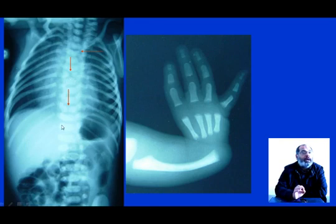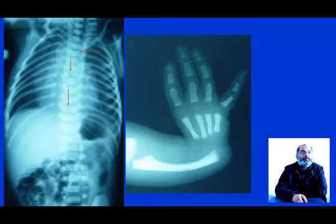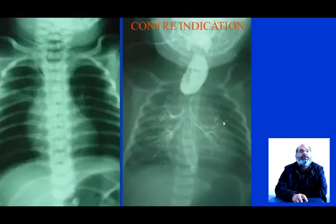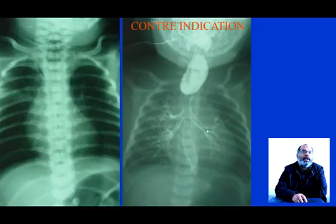A plain X-ray can provide us with a great deal of information for oesophageal atresia, including cardiac anomalies. We must not perform opacification, as this is very important to avoid — it creates aspiration danger and can damage the lungs.